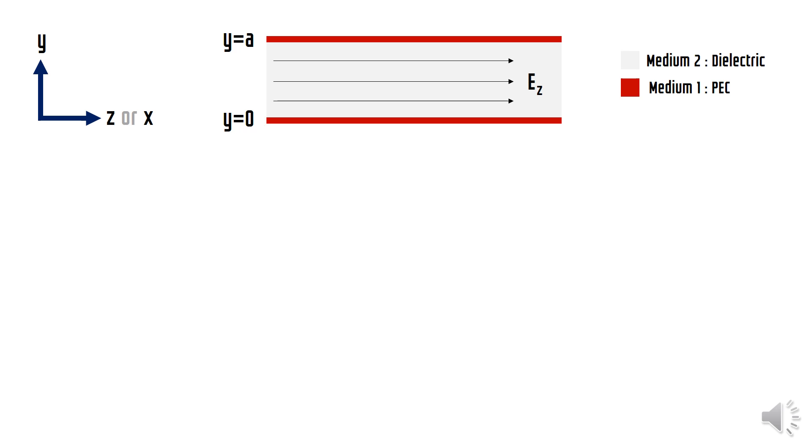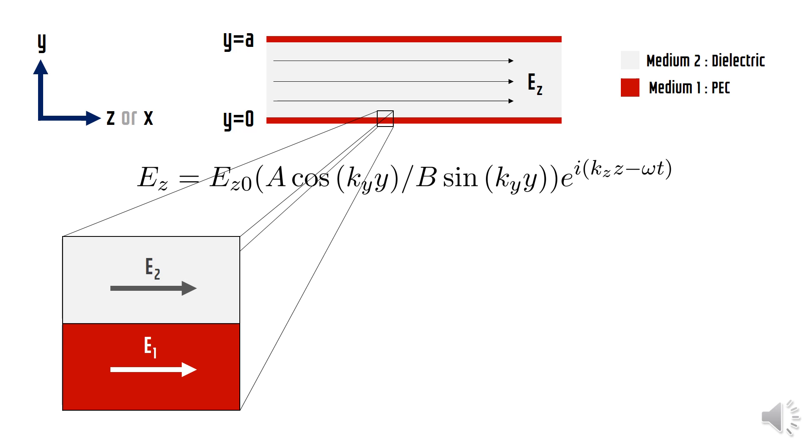First let us find the expression for Ez. Starting with the general expression, we see that the z-component of the electric field is parallel to the plates. We also see that the parallel component inside the metal is zero, assuming that the metal behaves as a PEC. Using this boundary condition, we can easily figure out that Ez should be zero at the interface given by y equals zero at all time.